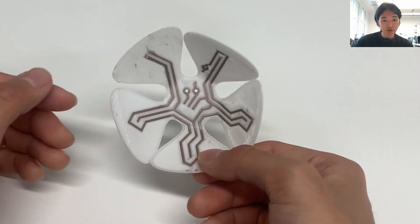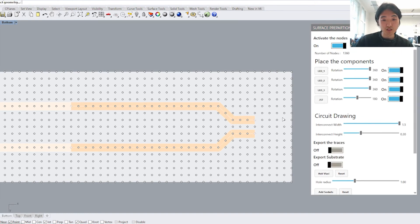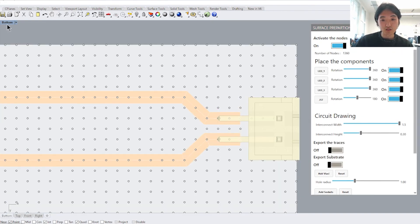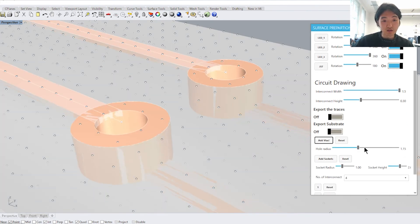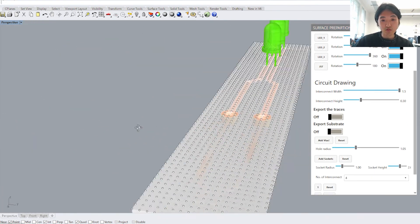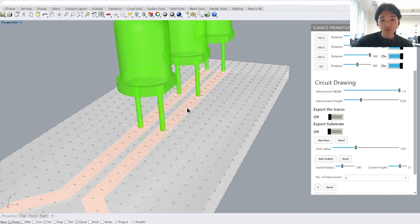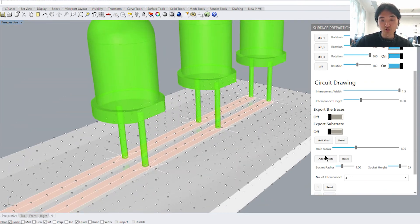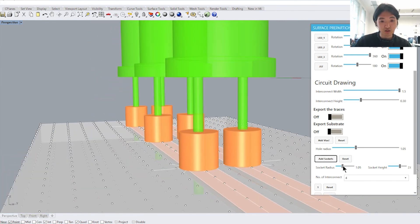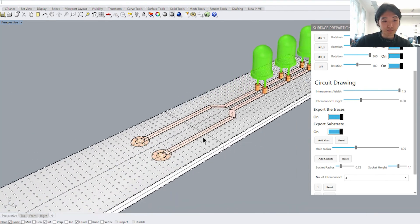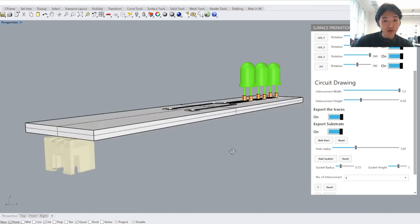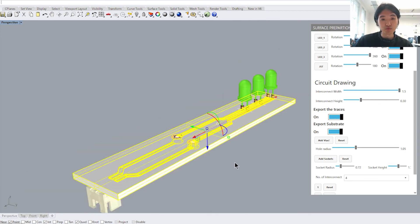To design TCB, we developed a parametric design editor within a common computer-aided design software called Rhino and Grasshopper. In this design editor, the user can use the points on the surface to draw the interconnect, locate vias and sockets and electrical components. At any point during the design process, the user can adjust the width and height of the conductive trace by adjusting the values on the slider. At the end, the user can bake the geometry and export it to 3D printing slicer.